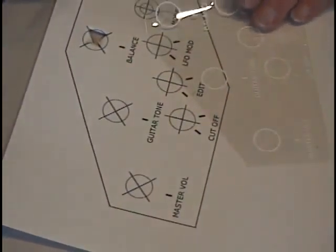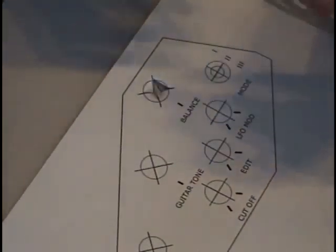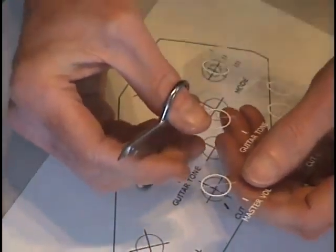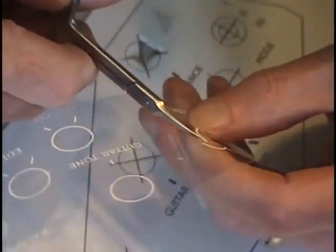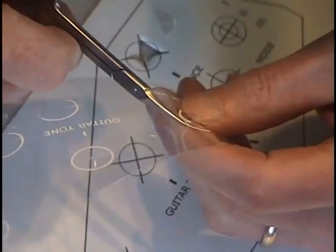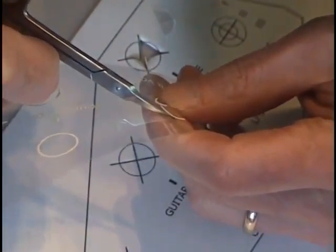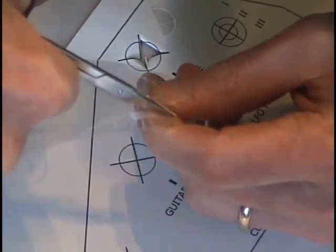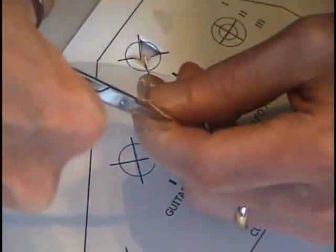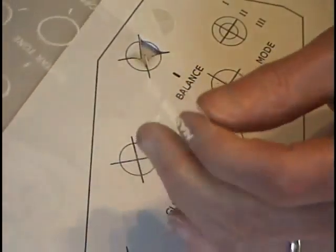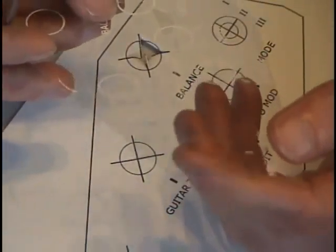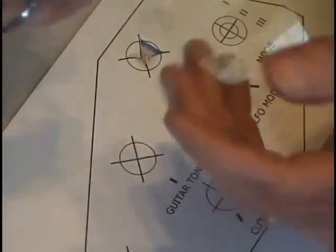So here we go. We're going to be cutting out seven circles using these scissors. So here we have our hole cut out for the master volume.